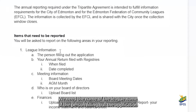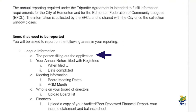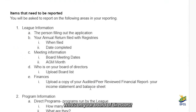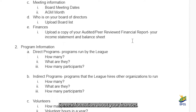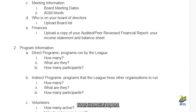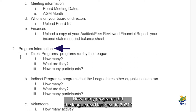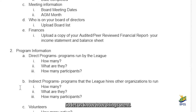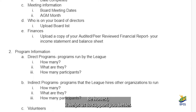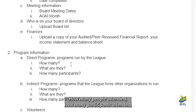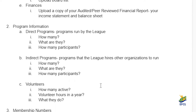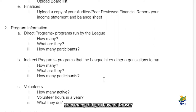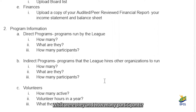We need the name of the league, the name of the person filling out the application, your annual return, some meeting information, who's on your board of directors, some information about your finances, your financial report. Then we need some program information — how many programs did the league run last year in 2021? We know that this has been a very different year, so let us know how things went. Be honest — it helps us to support you better. How many participants attended? And were there any programs that the league hired another organization to run? How many did you have of those, what were they, and how many participants?